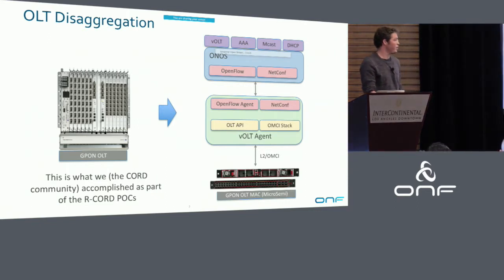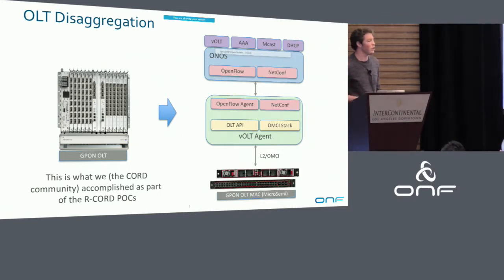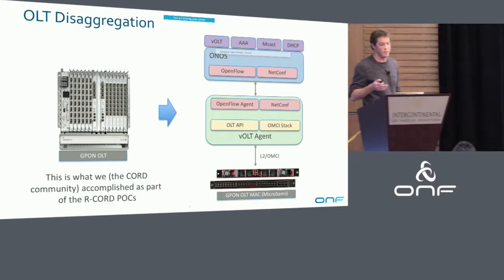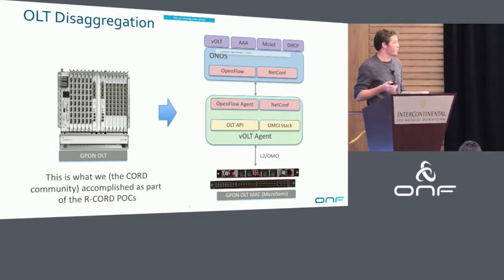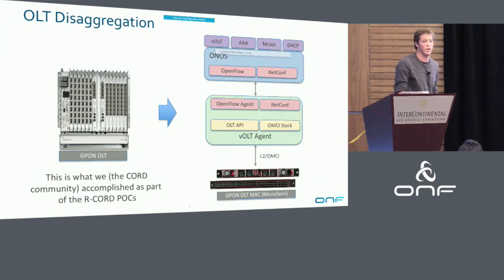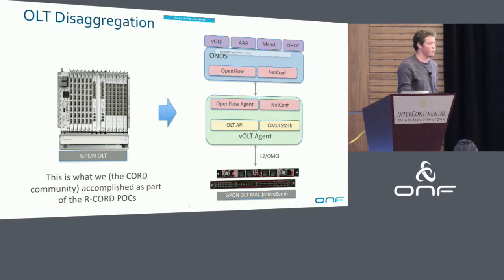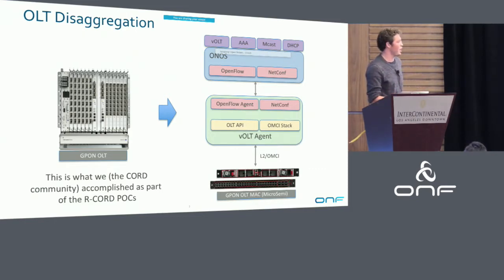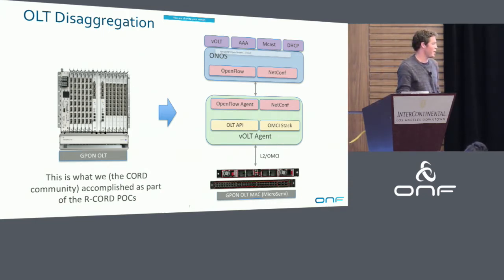Once they had the white box hardware available, the question was what should the disaggregated software stack look like? There was a desire to have these devices be SDN controllable so that we can control them using a traditional SDN controller in the same way that we control any other kind of access or switching equipment. Rather than building PON or OLT-specific things into the ONOS controller, we came up with this architecture where we have an intermediary agent layer which can translate between SDN constructs and PON configuration.